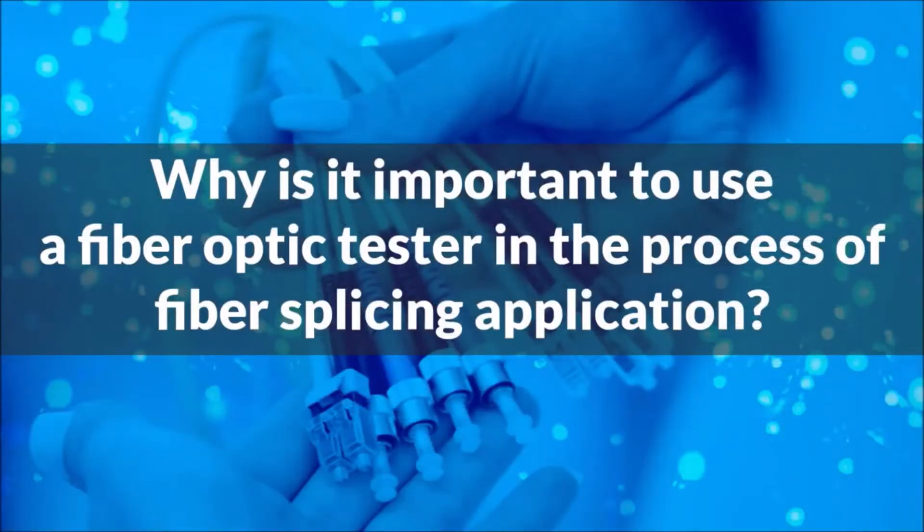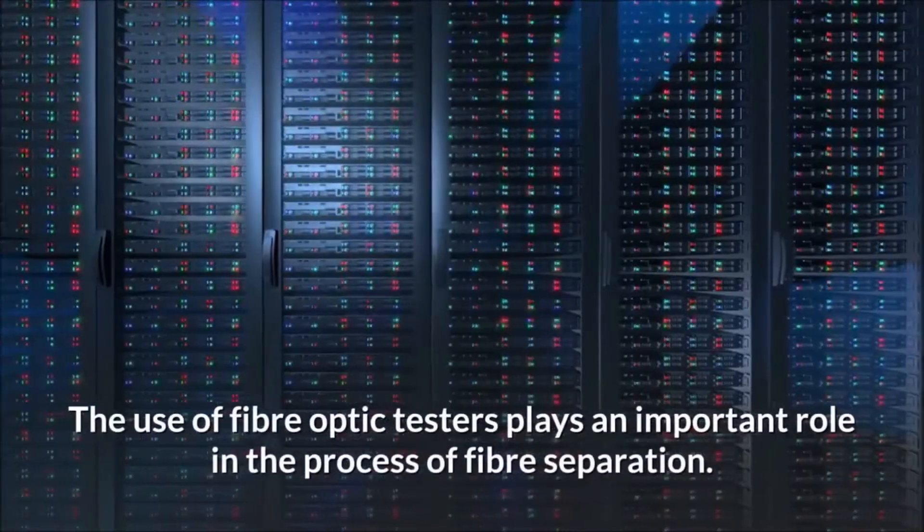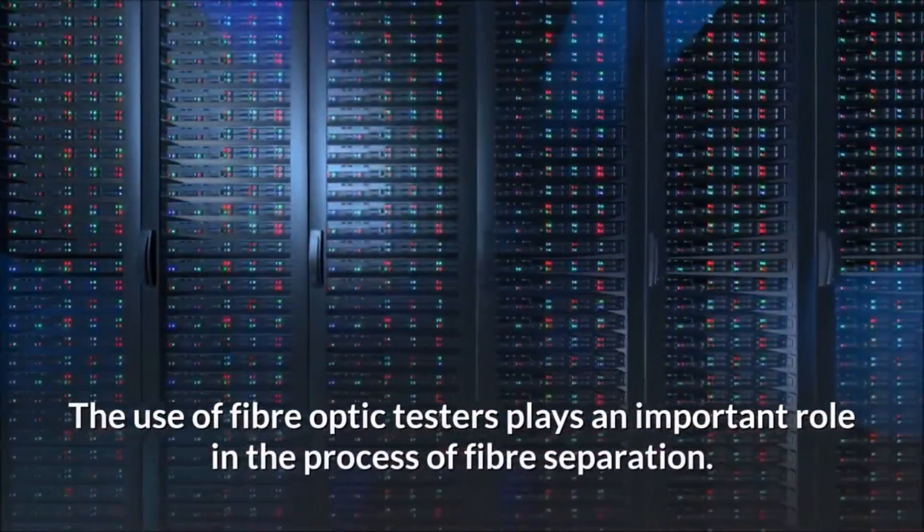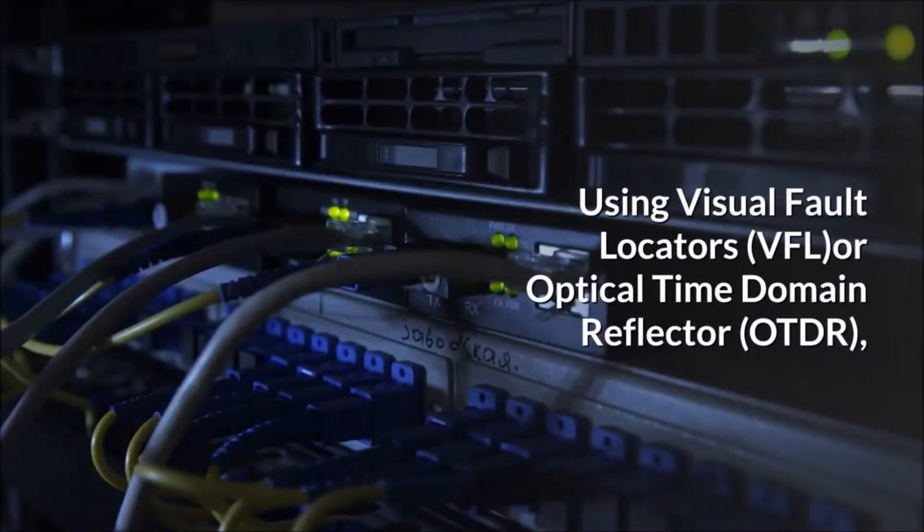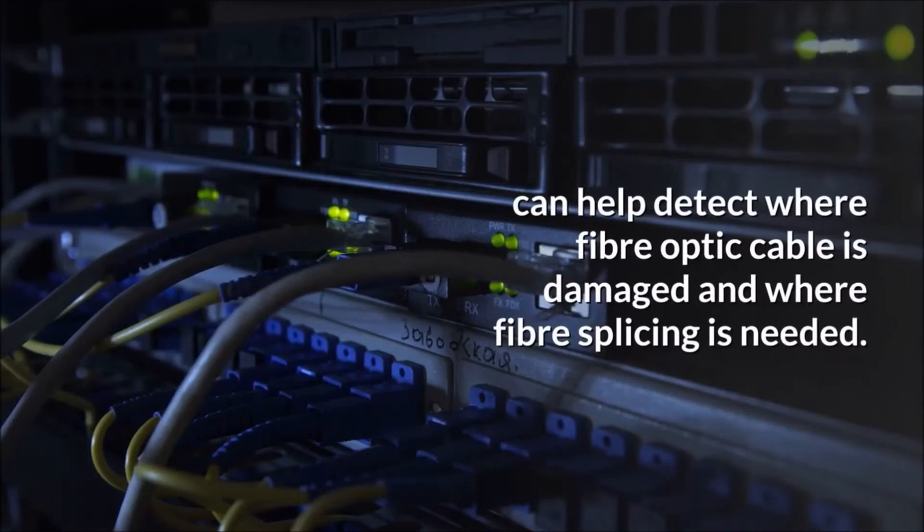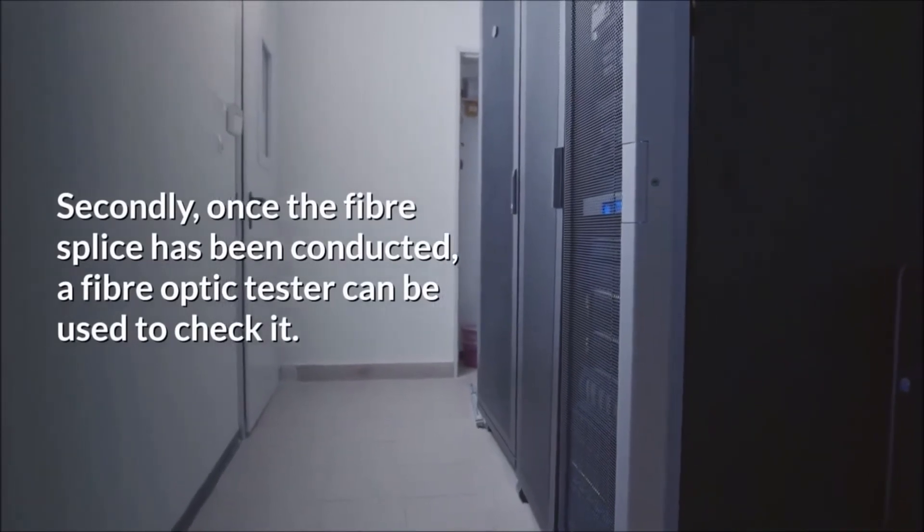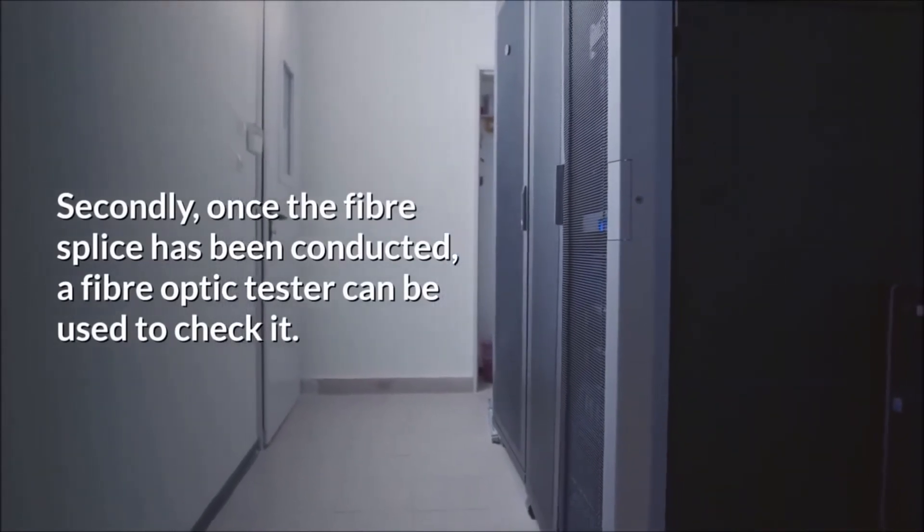Why is it important to use a fiber optic tester in the process of fiber splicing application? The use of fiber optic testers plays an important role in the process of fiber separation. Using visual fault locators or Optical Time Domain Reflector can help detect where fiber optic cable is damaged and where fiber splicing is needed. Secondly, once the fiber splice has been conducted, a fiber optic tester can be used to check it.